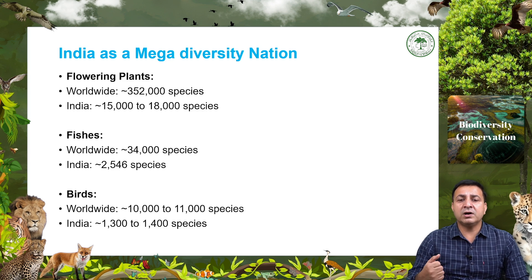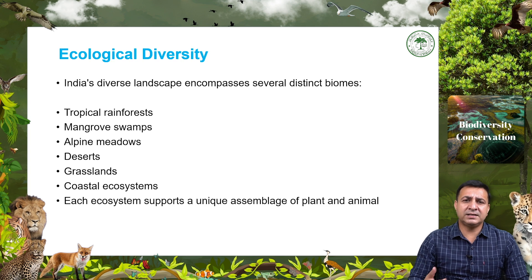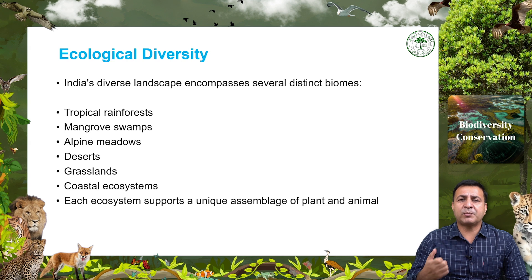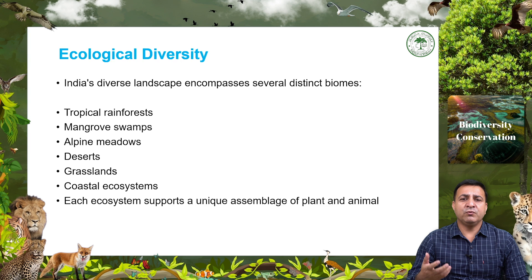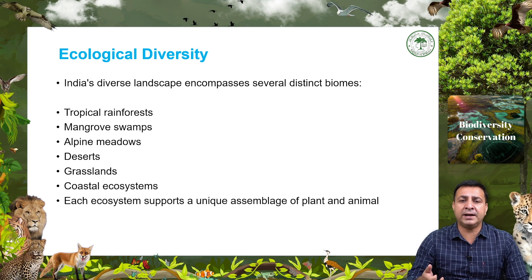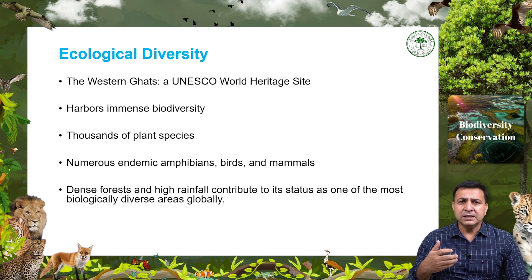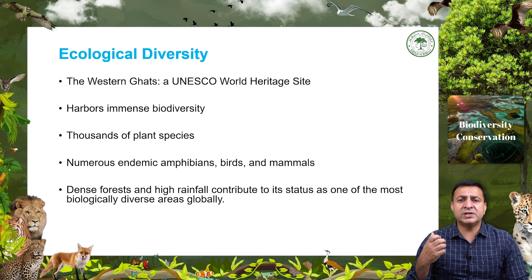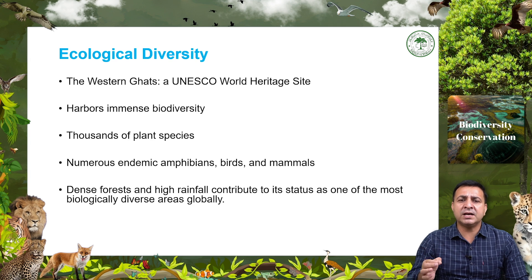For birds, worldwide there are approximately 10,000 to 11,000 species, and India is home to about 1,300 to 1,400 species. India's diverse landscape comprises several distinct biomes including tropical rainforests, mangrove swamps, alpine meadows, deserts, grasslands, and coastal ecosystems. Each of these ecosystems supports a unique assemblage of plant and animal species, many found nowhere else on earth. The Western Ghats, a UNESCO World Heritage site, harbors immense biodiversity with thousands of plant species and numerous endemic amphibians, birds, and mammals. The region's dense forests and high rainfall make it one of the most biologically diverse areas in the world.